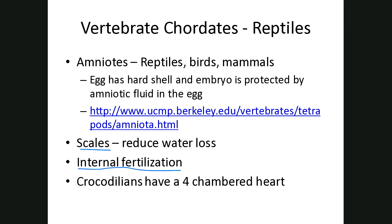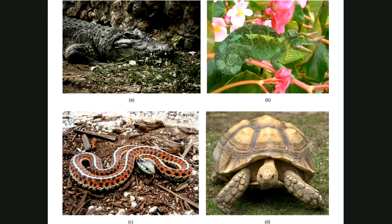The crocodilians are one group of reptiles worth mentioning because amphibians only have three chambers to their heart, which is not as efficient for gas exchange and getting nutrients where they need to go. A four-chambered heart is a step up from a three-chambered heart. The crocodilians are the group of reptiles that have a four-chambered heart. Here we see four different species belonging to reptiles: a crocodile, a chameleon, a snake, and a turtle.